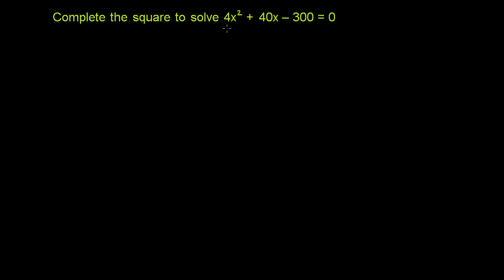We're asked to complete the square to solve 4x squared plus 40x minus 300 is equal to 0. So let me just rewrite it. So 4x squared plus 40x minus 300 is equal to 0.